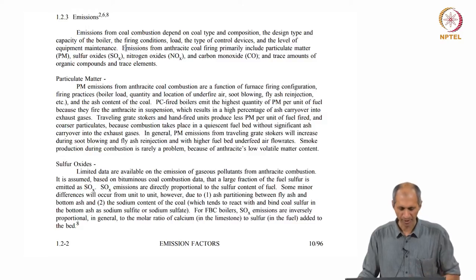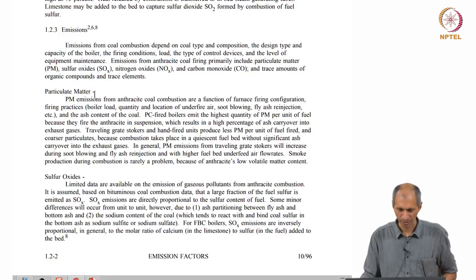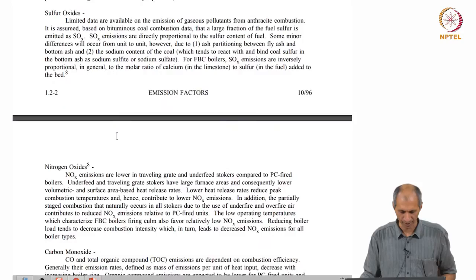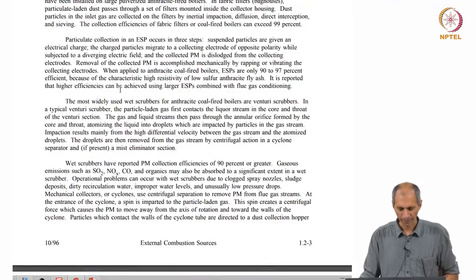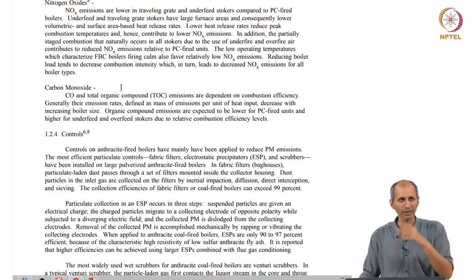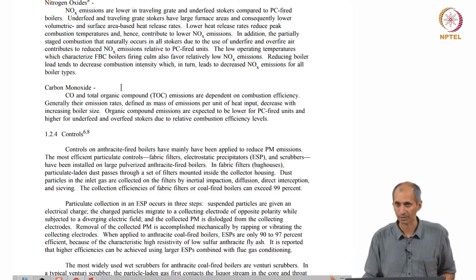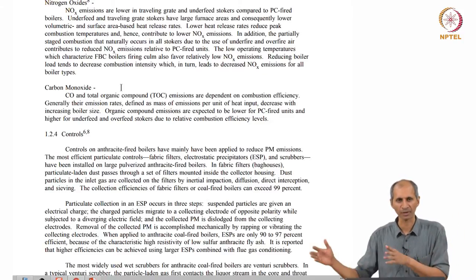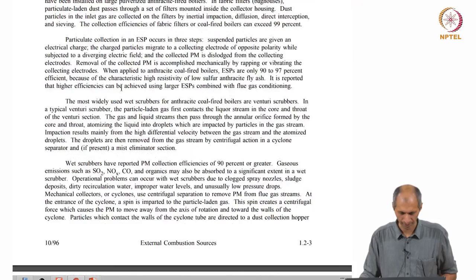The known emissions include particulate matter, sulfur oxides, nitrogen oxides, and carbon monoxide — four major things — along with controls. In industries, you burn something, you have emission control because you know the emission exists. 80% of emission may be removed; this is what it is without control and this is with control, making the case for having controls.